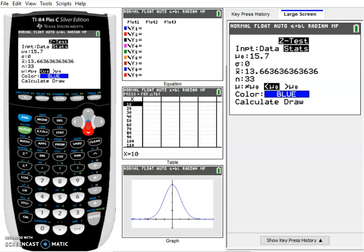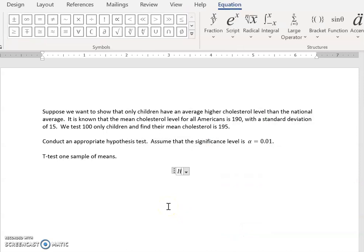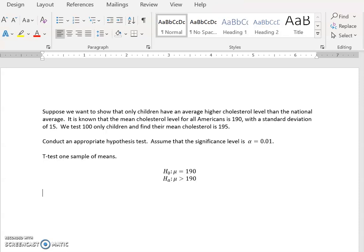Our null hypothesis is that the mean is equal to 190, the assumption for all Americans. The alternative is that the mean is greater than 190. We want specifically to know they have an average higher cholesterol, so that means greater than. This is a one-tailed test.